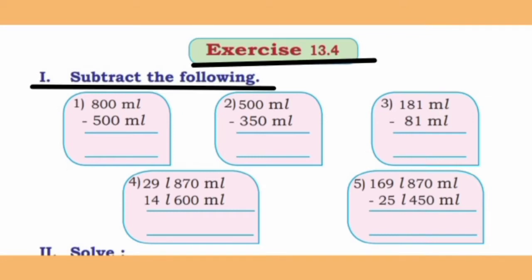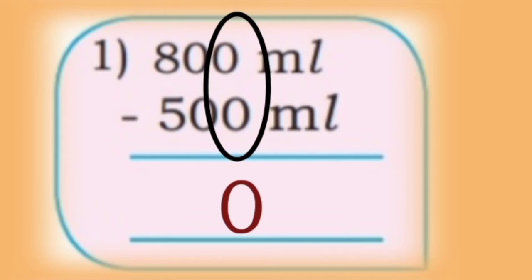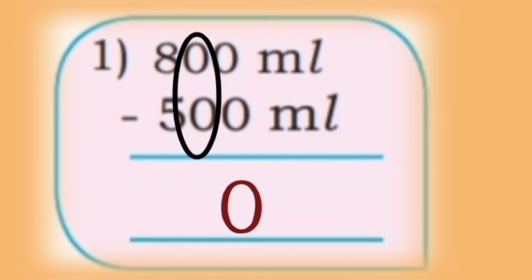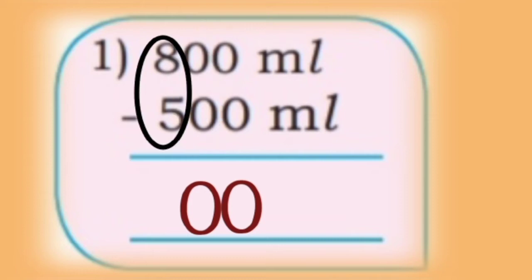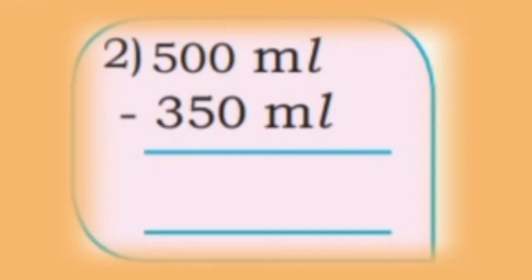First sum: subtract the following. First one: 800 milliliter minus 500 milliliter. First we subtract the unit place: 0 minus 0 is 0, write in unit place. Now subtract the tenth place: 0 minus 0 is 0, write in tenth place. Now subtract the hundred place: 8 minus 5 is 3, write in hundred place.